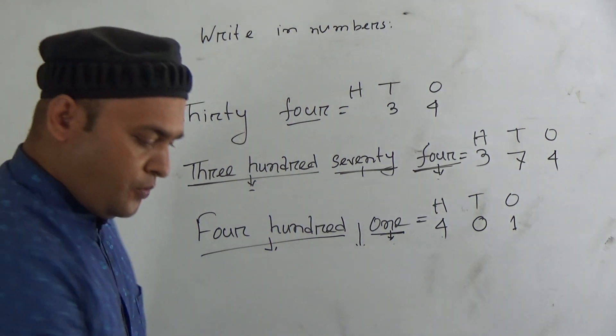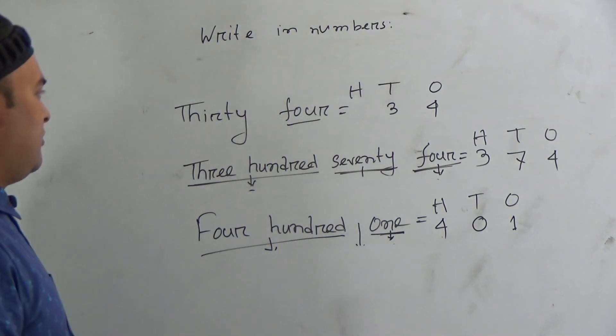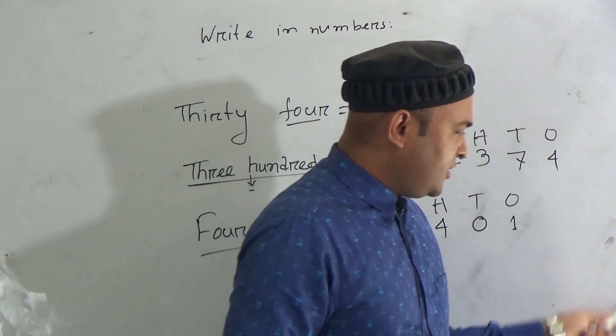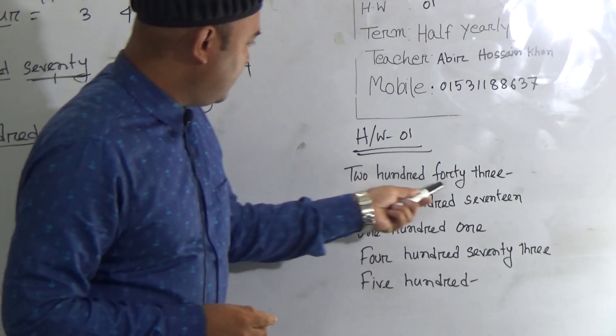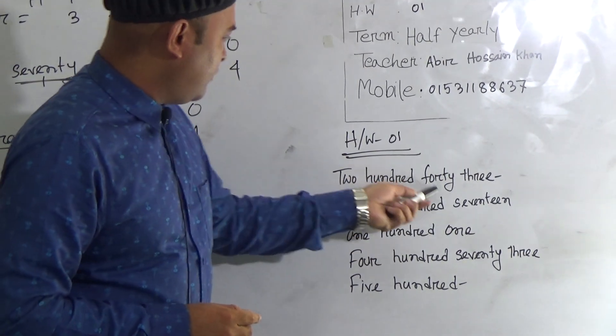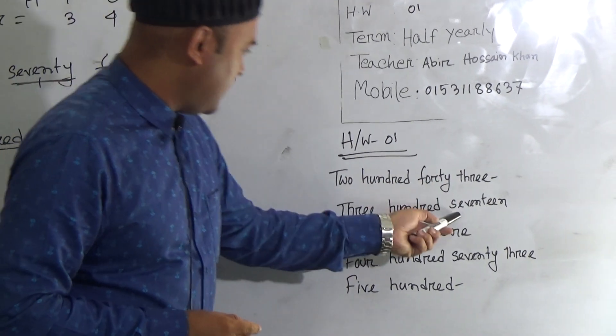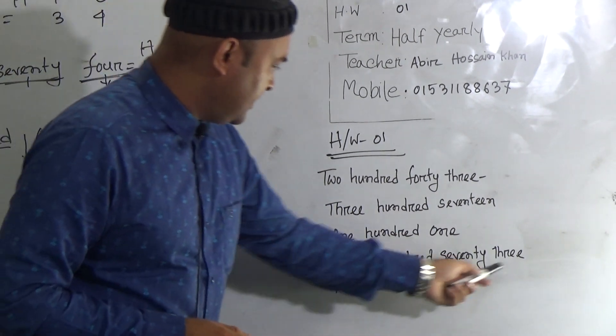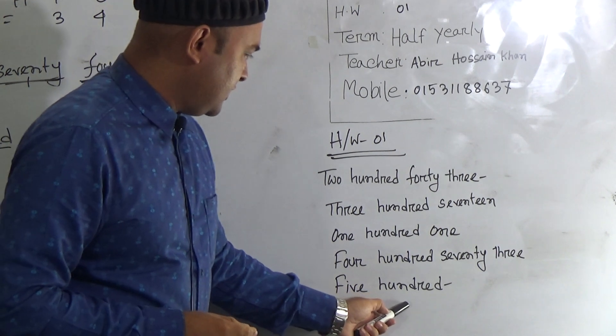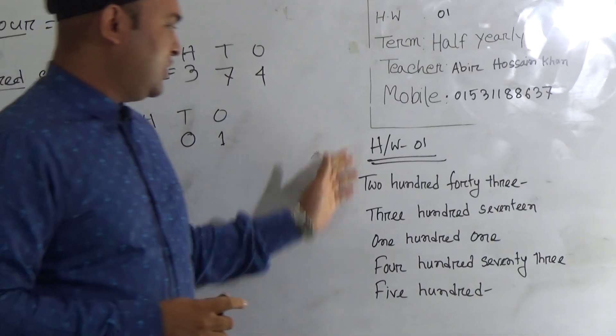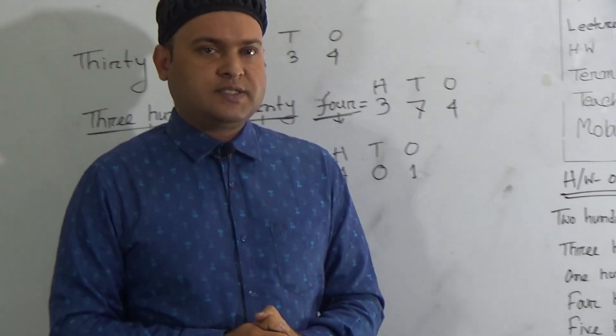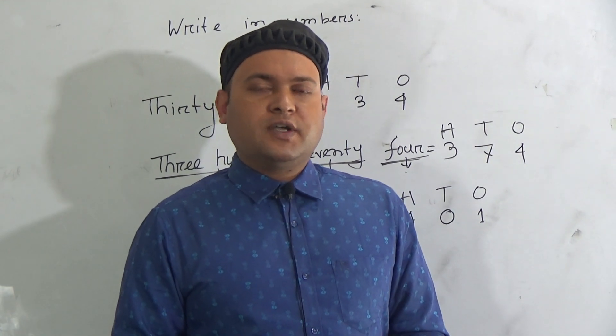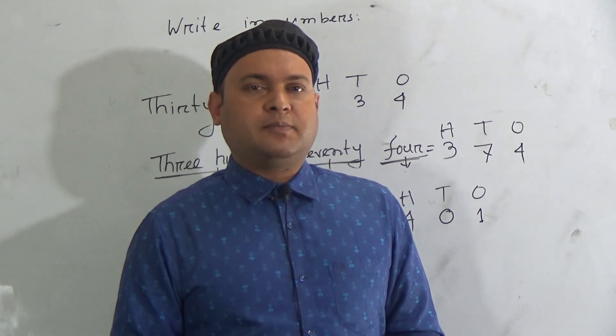My dear students, hope you understood how to write in numbers using the place value. Here is your homework: 253, 243, 317, 101, 473, 500. You have to submit your homework on your school campus each Saturday. Practice it at your home more and more. See you soon and till then, Allah Hafez.